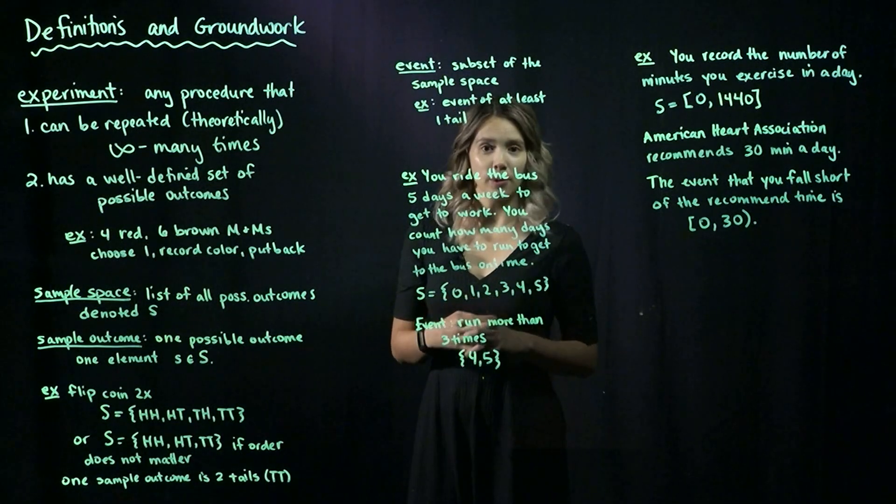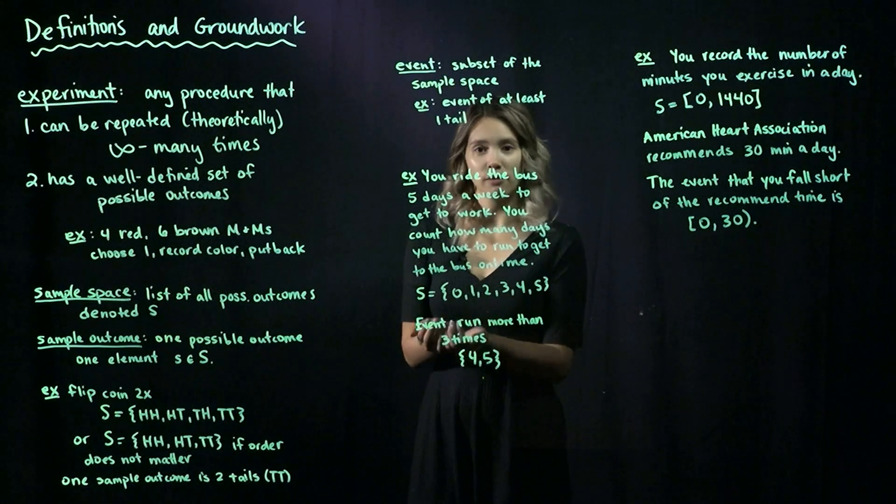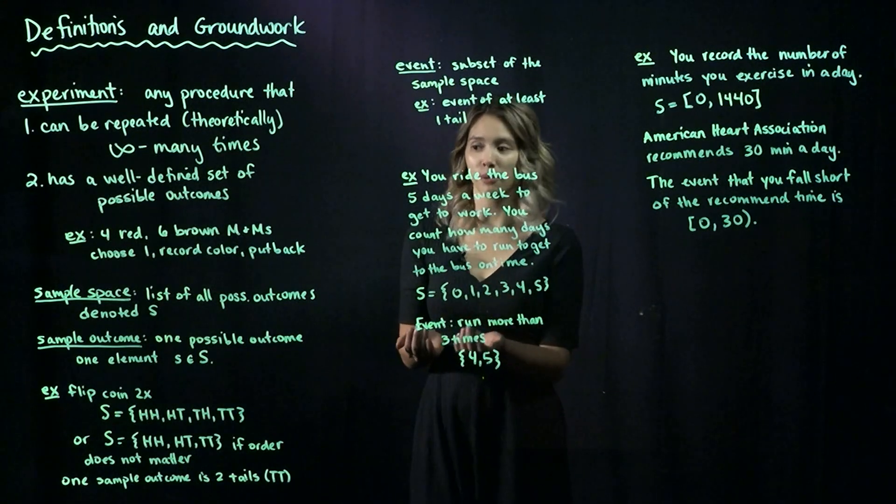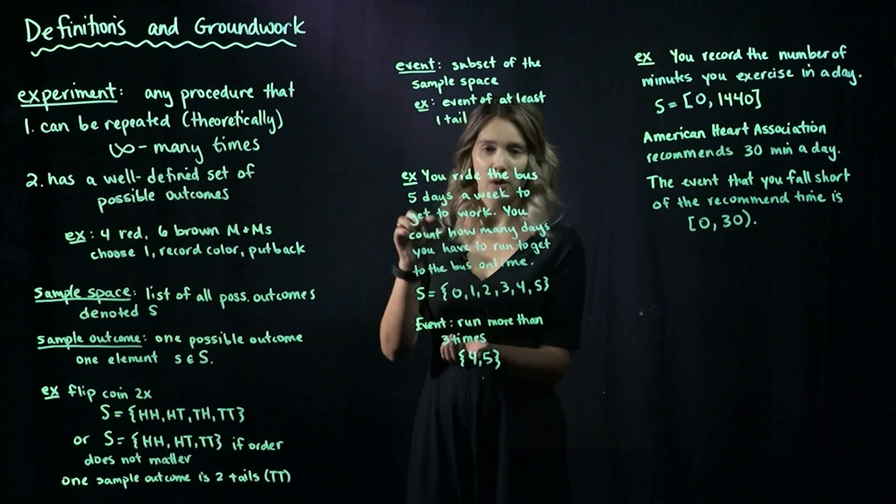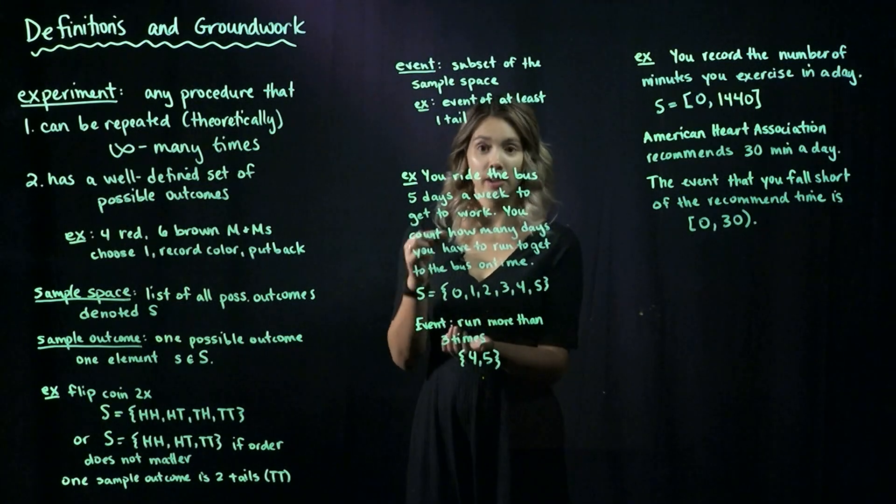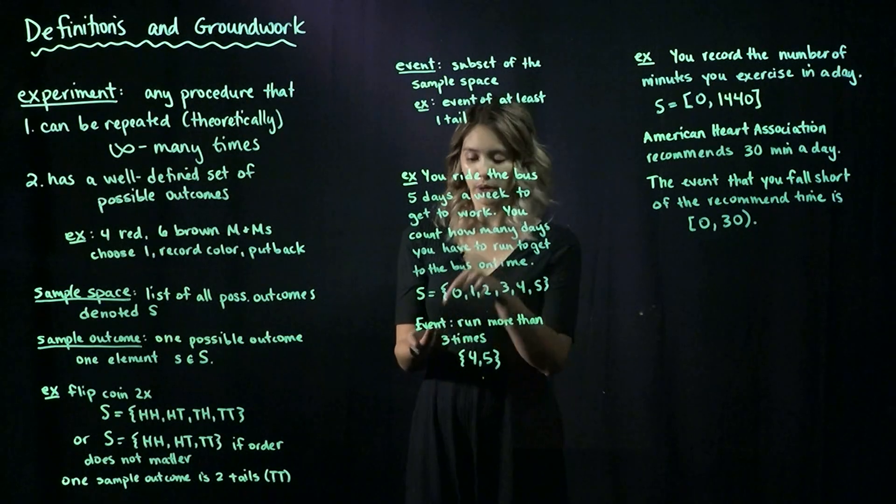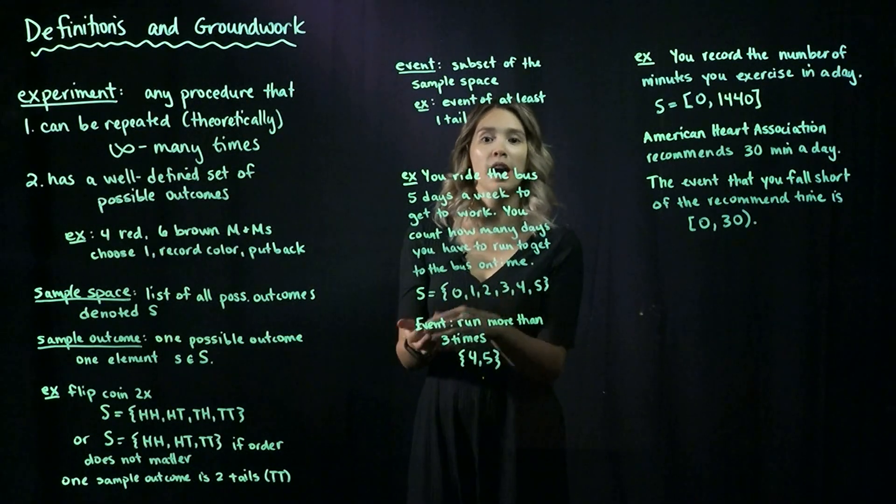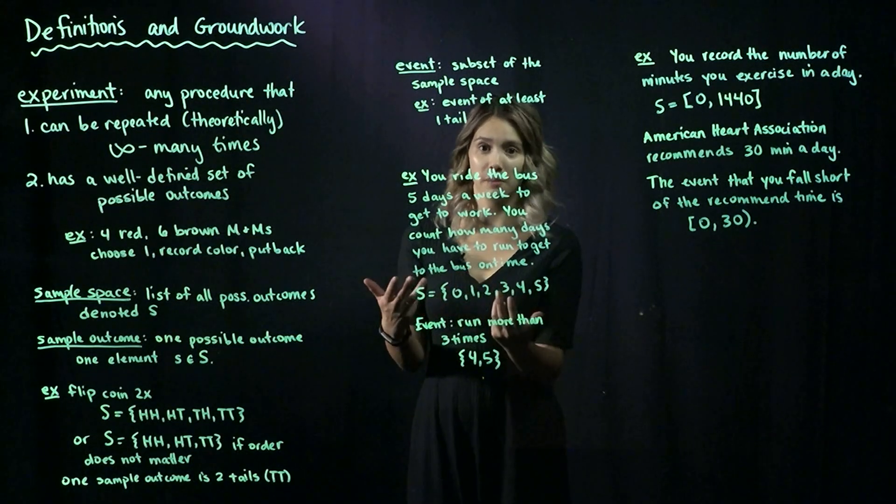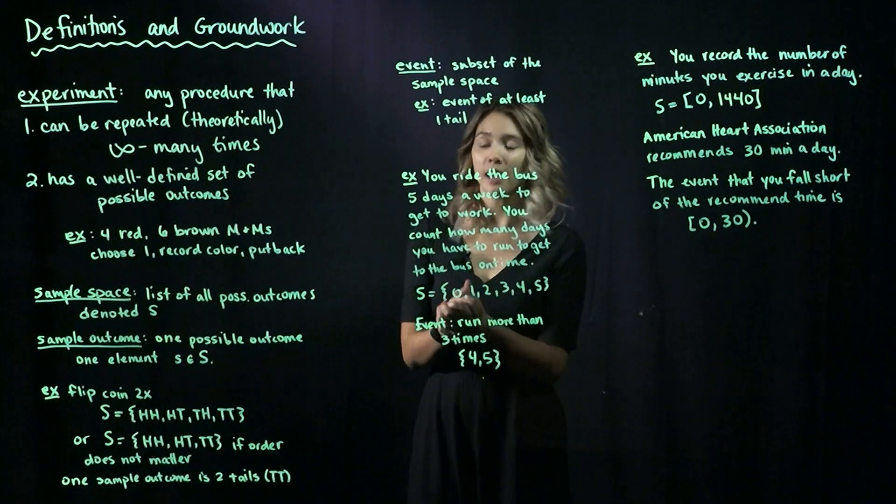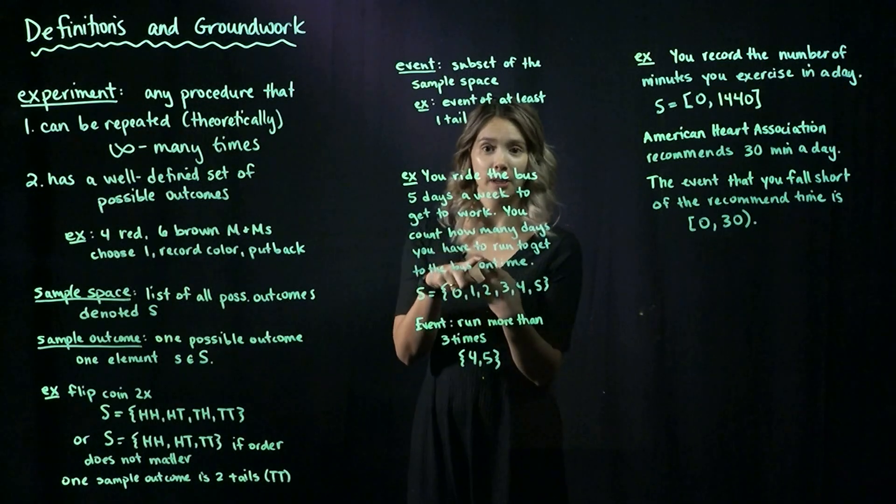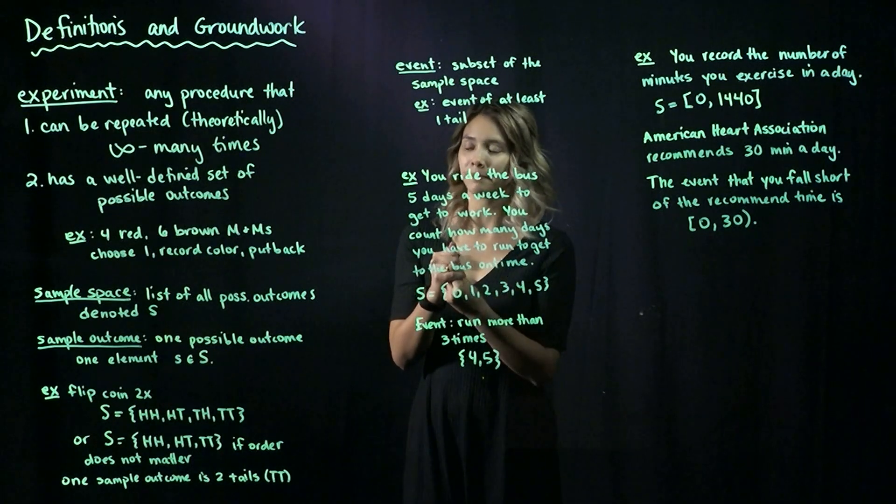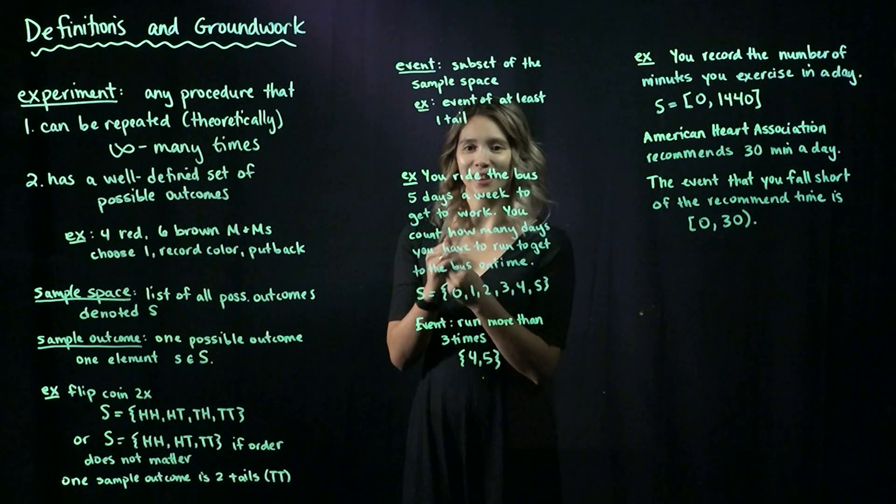For example, say I have 10 M&Ms, 4 are red and 6 are brown. One experiment I could do is pluck out one M&M, record the color, and then put it back. Since I'm putting back the M&Ms rather than eating them, I could repeat this experiment infinitely many times in theory. And the outcomes are well-defined because I could either get a red M&M or a brown M&M. So that's our definition of experiment.